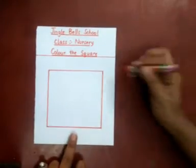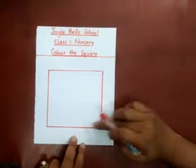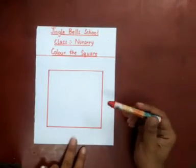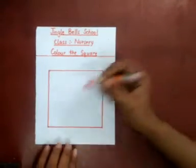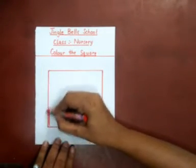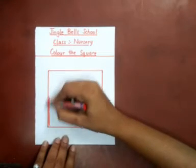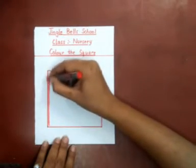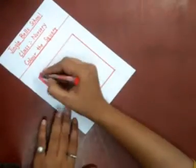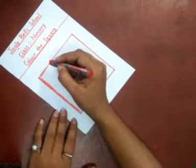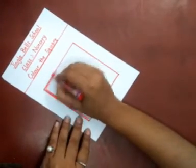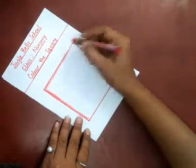We will do the outline first, as I have told you earlier. You can see here, a red color outline is there and we will do red color inside this. You can turn your page. I am requesting parents that they can make a worksheet like I have made and give it to your child for coloring.